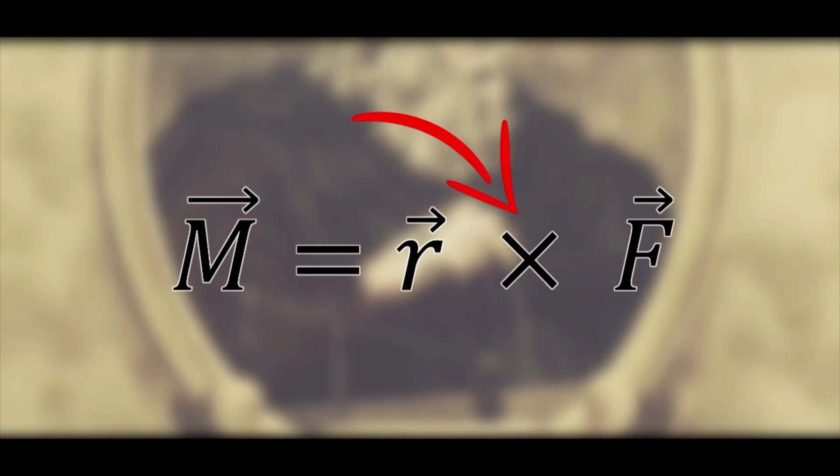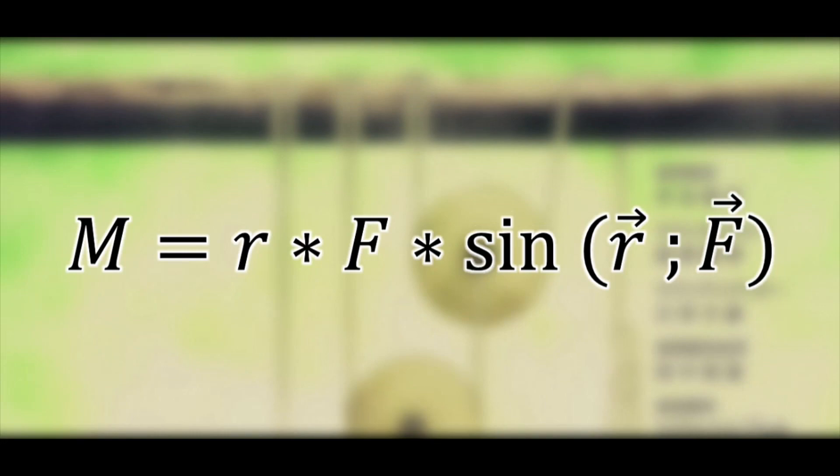And this cross between r and F is not the typical multiplication sign, but it means that we are counting the cross product, so we are multiplying r by F and by the sine of the angle between the arm and the force.